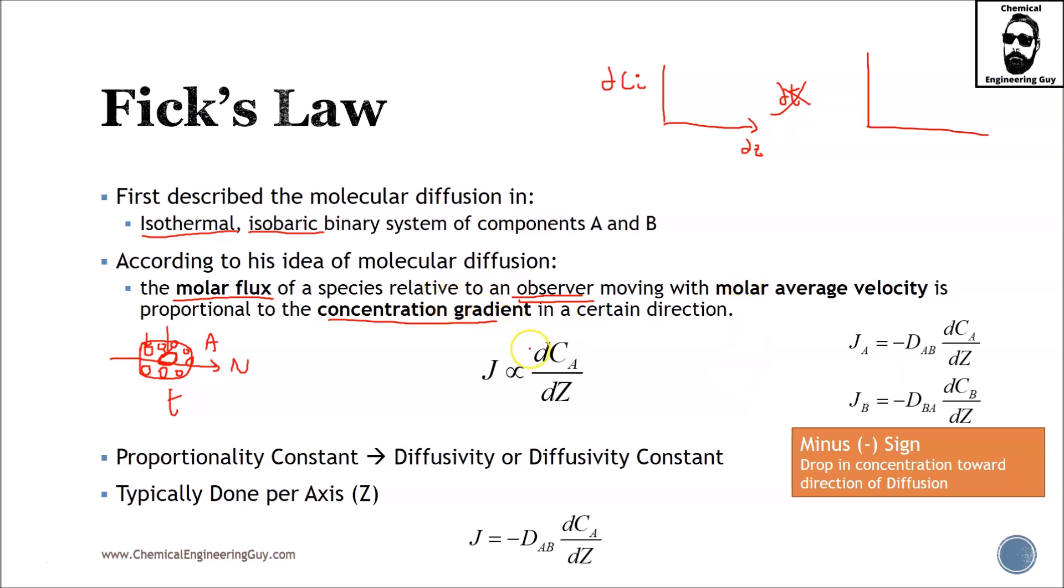And the concentration is the driving force for mass transfer. The equation goes as follows: J, which you already know, essentially the amount of mole per area per time, is proportional to the change in concentration, which is mole per volume divided by the distance. What else do we have here? You already know that proportional constant is just an idea. What we need is to get rid of that proportionality and we get a variable.